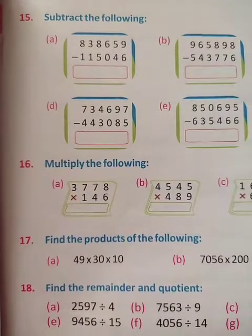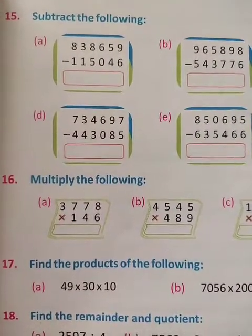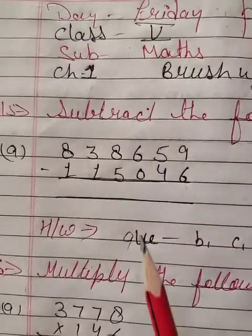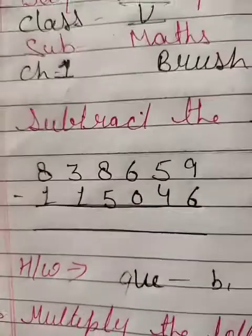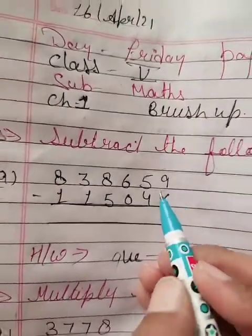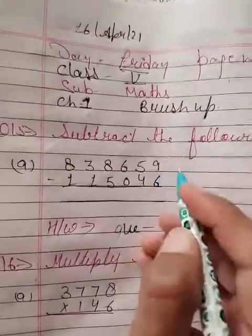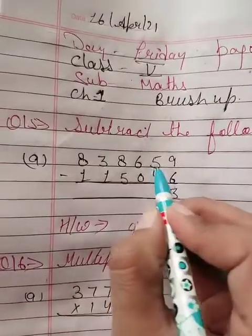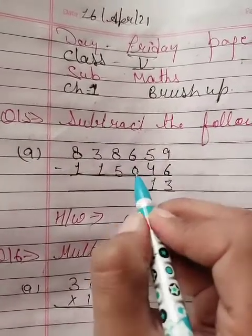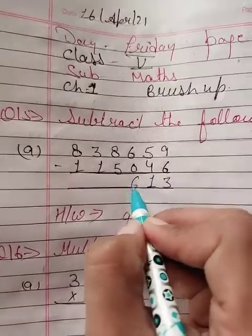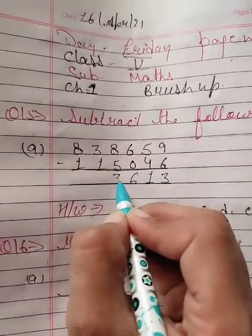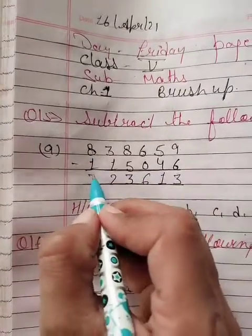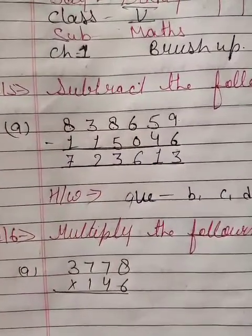Here question number 15: subtract the following. Here you will write like this — subtract the following, question number 1. Now you will subtract 6 from 9. 9 minus 6 equals 3. 5 minus 4 equals 1. 6 minus 0 is 6. 8 minus 5 equals 3. 3 minus 1 equals 2. And 8 minus 1 equals 7.